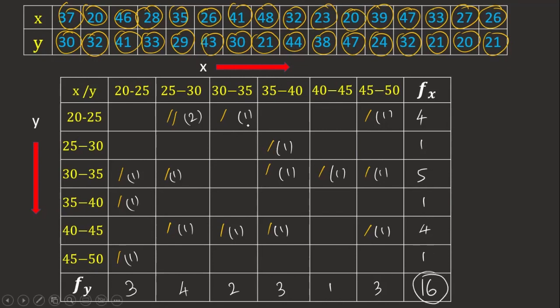This is how we construct a bivariate frequency distribution for the given data. Sometimes there may be five or six classes depending on your data. I hope you understood how to construct a bivariate frequency table. If you have any doubts, you are always welcome to ask on our channel — please visit, share, and like. Thank you very much, have a nice day.